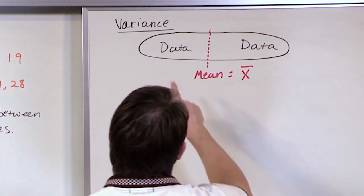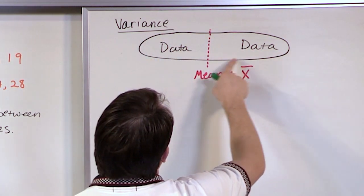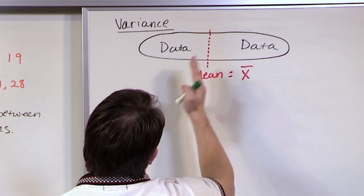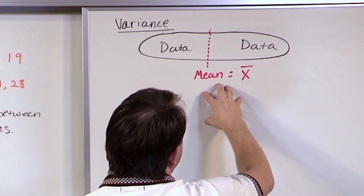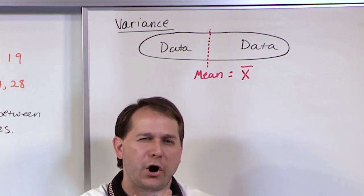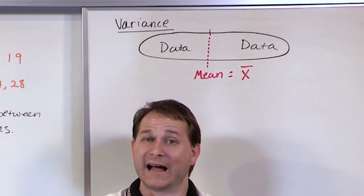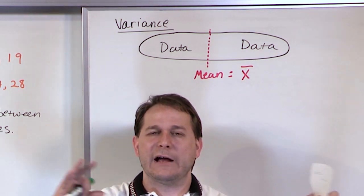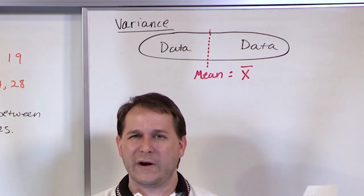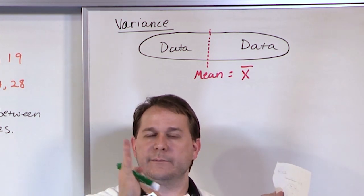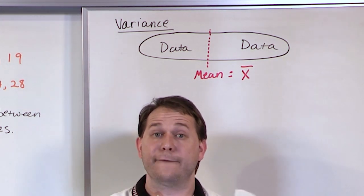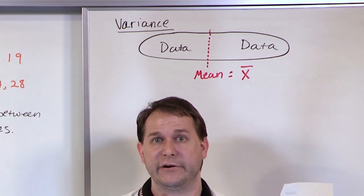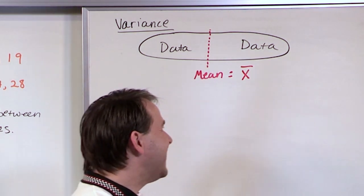If I wanted to look at each data point and visualize this cloud as a bunch of data points — some here, some there with different values — and here is kind of the mean. If I wanted to figure out how far each individual data point is from the mean, I'm measuring the spread of each individual data point, which is what we're trying to figure out.